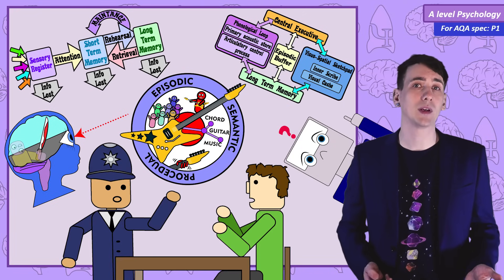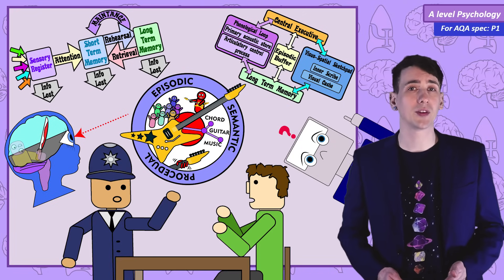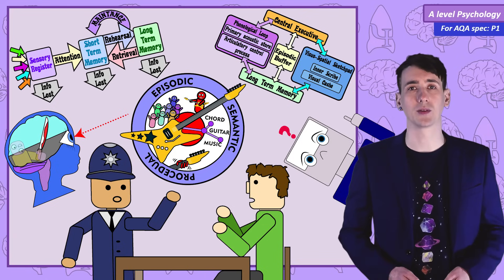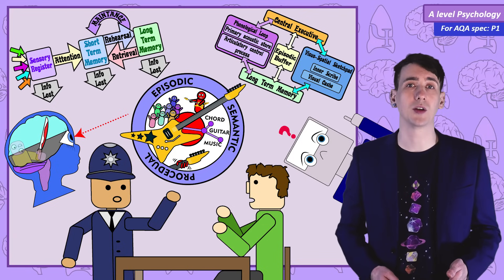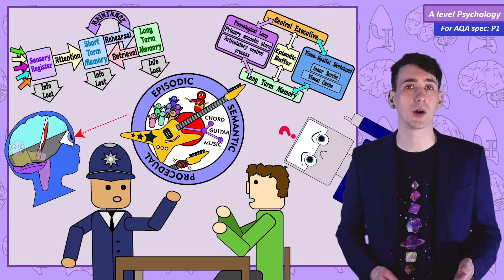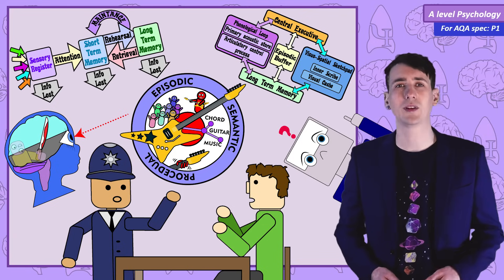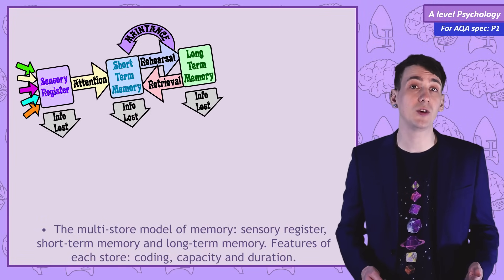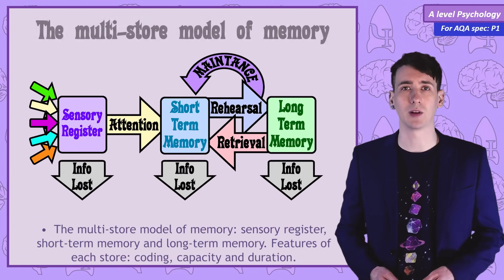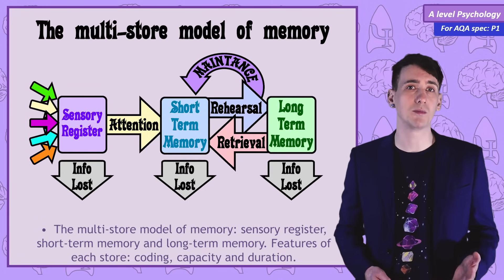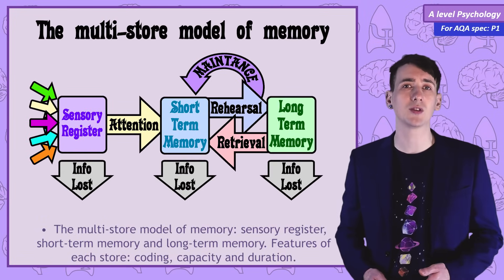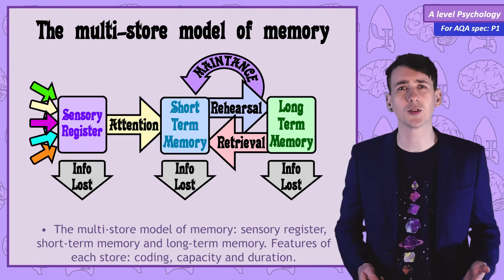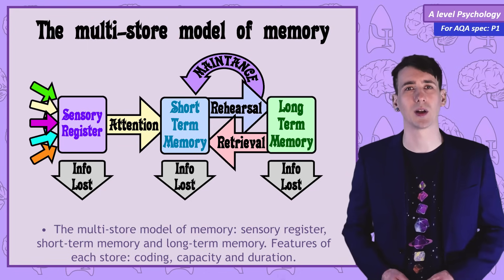Many of the topics in the memory unit come from an area of psychology called the cognitive approach, and you might want to watch my videos on the cognitive approach either before or after these videos. In this first video we are going to cover the multi-store model, the stores it's made from, the features of each of these stores, how information flows through it, and of course some evaluations of the model.